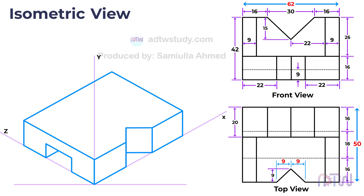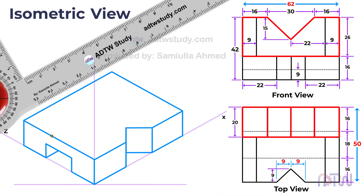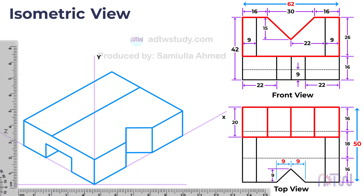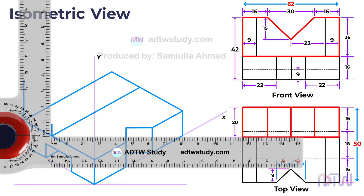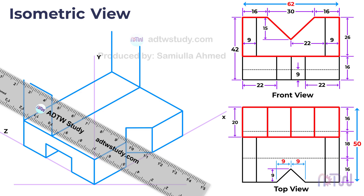This completes the base. Next we need to draw the top portion of the object. From the top view, there are two parts: a vertical wall having a notch, and two side inclined walls. We will first construct the vertical wall on the base. From the top view, this wall extends from end to end of the base, giving it a length of 62 millimeters and a thickness of 20 millimeters. The height of this vertical portion is given as 26 millimeters. Mark a point 20 millimeters away from the corner point, then draw vertical lines of 26 millimeters length from each corner point of this rectangle.